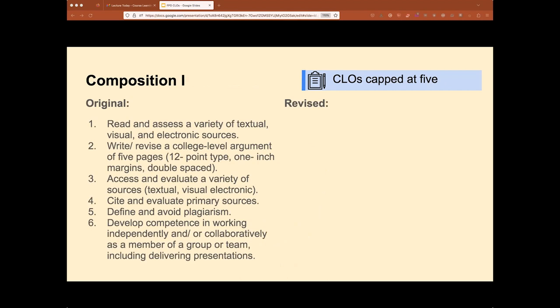So we started off with composition one. We knew that we were looking at two courses and thinking about how they were going to build on each other. We wanted to focus on three to five course learning outcomes. We found that that was the most manageable number for designing a course and for communicating with students. Anything more than that tends to get a little overwritten and hard to manage. So you can see with composition one, we had six to begin with. So we knew we wanted to pare these down a little bit. Looking over what we began with, I really want to take a look at number two here: Write and revise a college level argument of five pages.